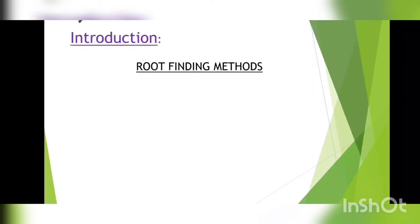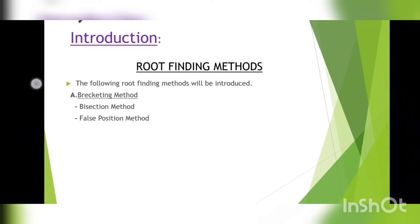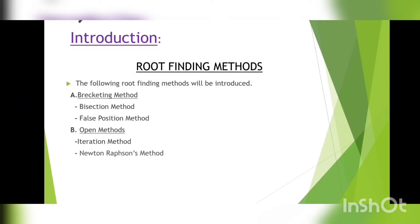Now, let us talk about root finding methods. There are two types of root finding methods: 1. Bracketing method, and 2. Open methods. Bracketing methods determine successively smaller intervals or brackets that contain a root, such as the bisection method and the false position method.